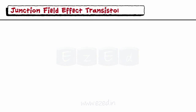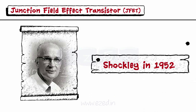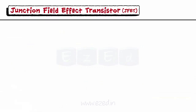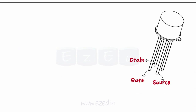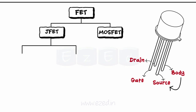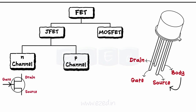Junction field effect transistor was first described by Shockley in 1952. JFET is a four-terminal device with terminal names as gate, drain, and source. The fourth terminal, called the body terminal, is always connected to the source. There are two types of JFETs: N-channel JFET and P-channel JFET. Thus, we represent only three terminals in the symbol of JFET.